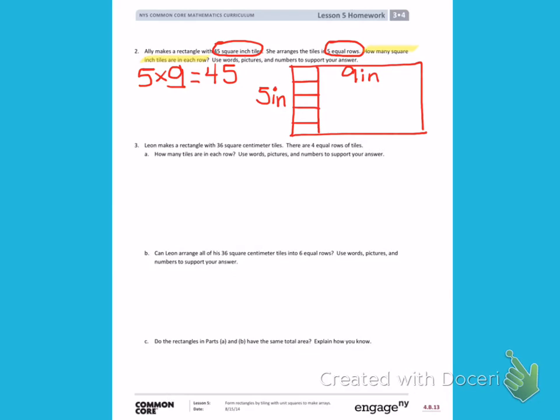So my second measurement would be 9 inches. Using words, there are 9 tiles in each row.